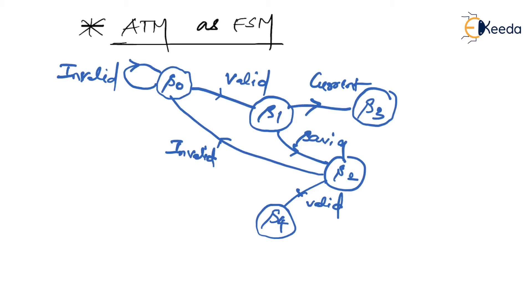If you have entered a valid PIN number, the machine moves to another state called S5. In S5 state, it asks you to enter the amount you wish to withdraw. The amount entered must be a valid amount — for example, it must be a multiple of hundreds. If you enter 50 or 25, such amounts are considered invalid.